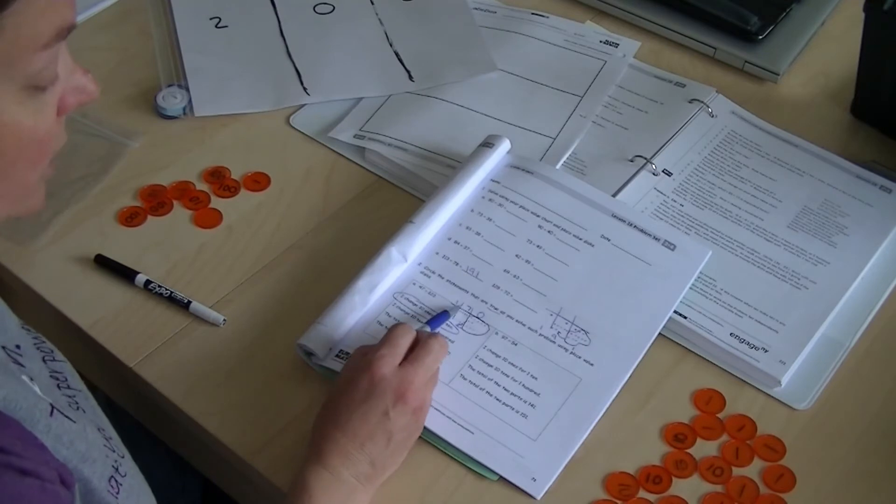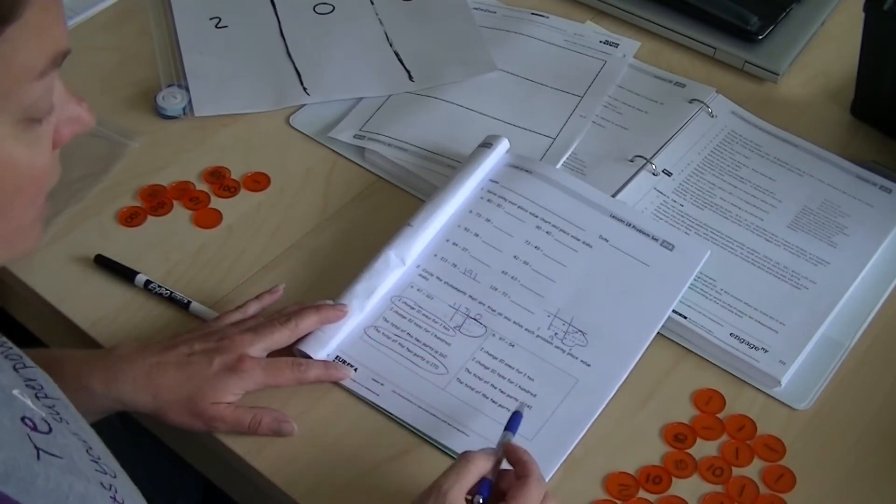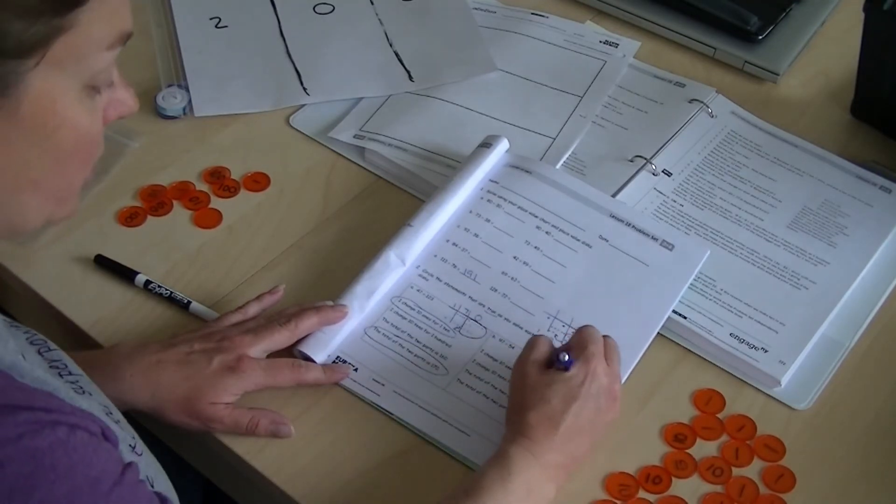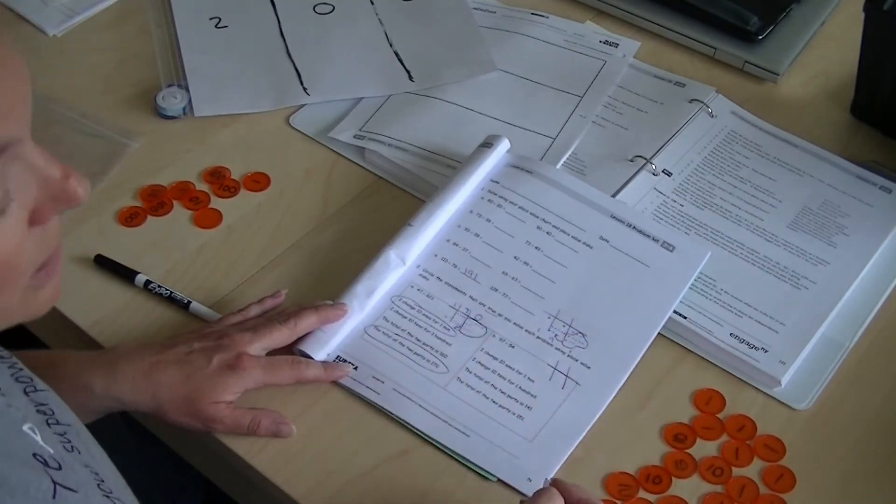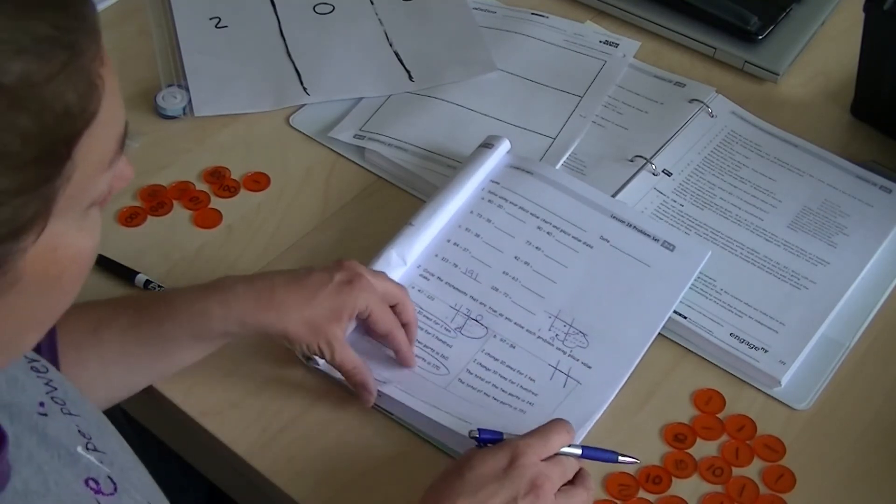The total of the two parts is 170? Yes. All right. You try this one by yourself. Draw your place value chart to help you. That's what you will need to do so you can see what you are doing. That's why I did that. Right?